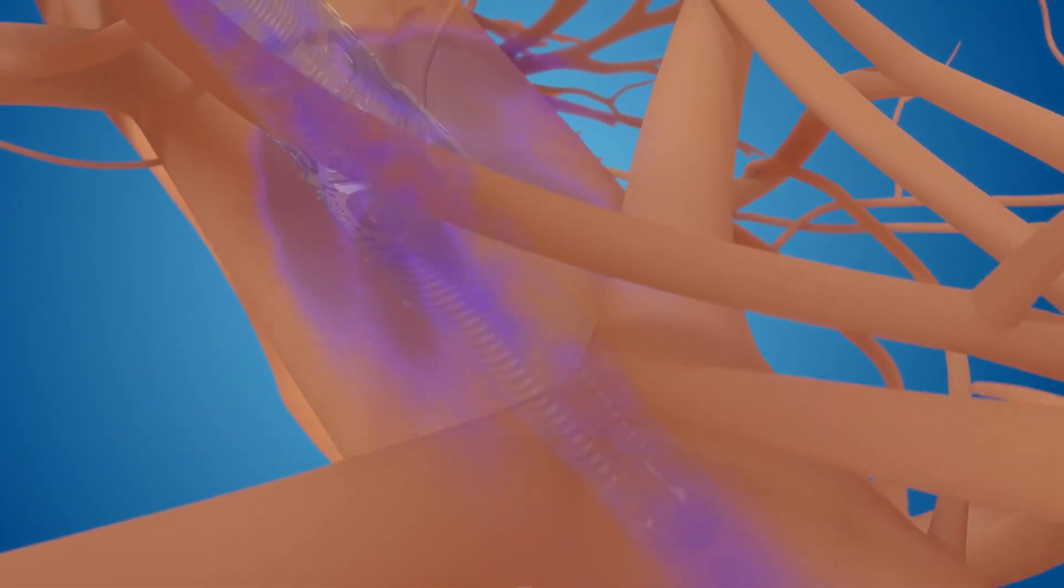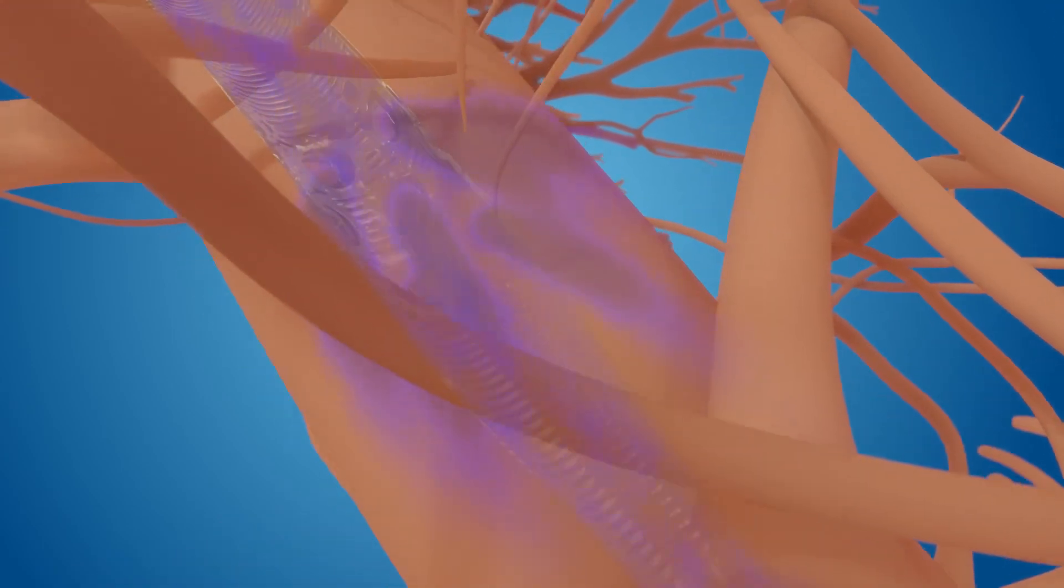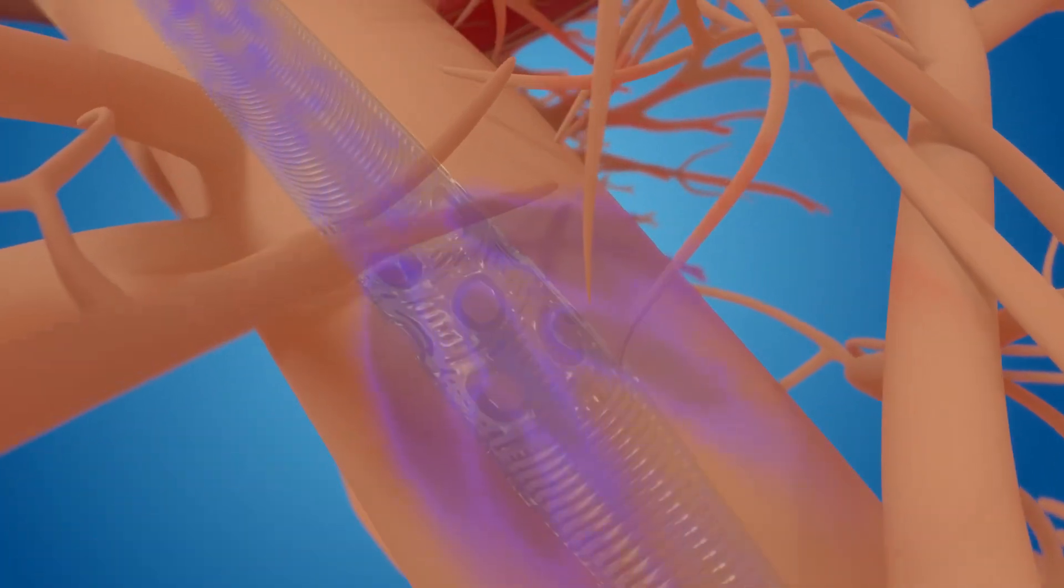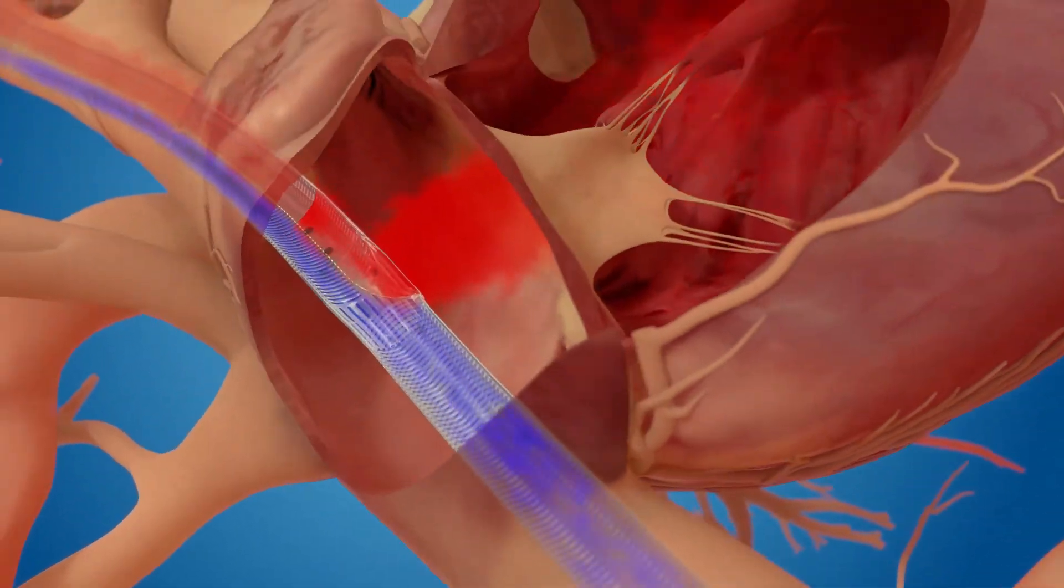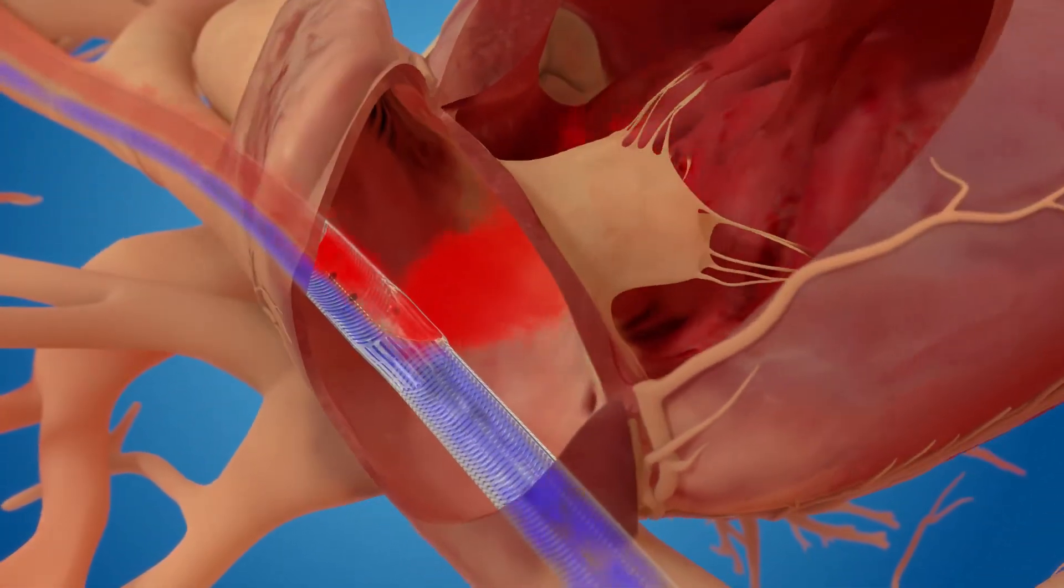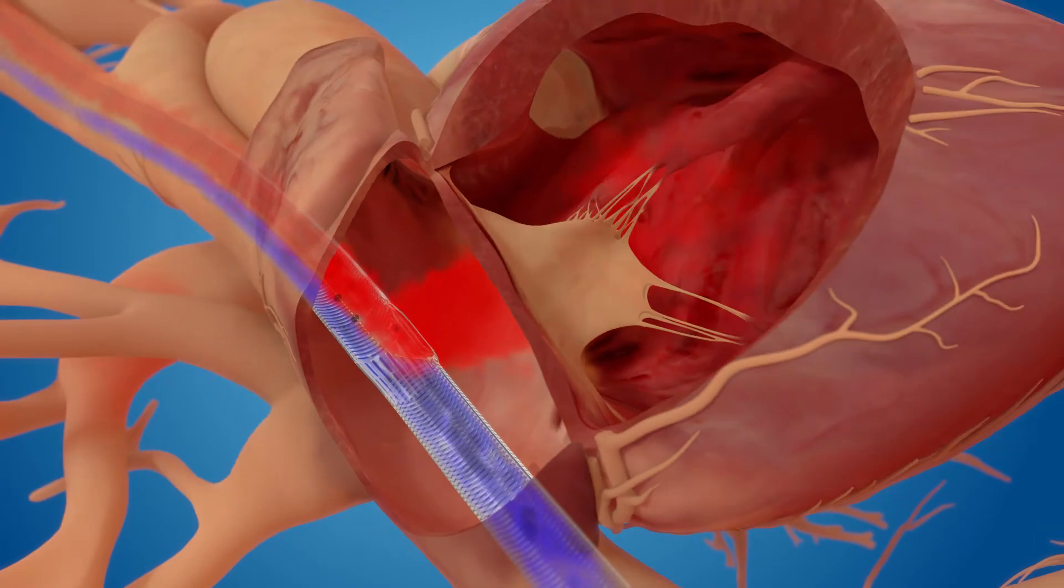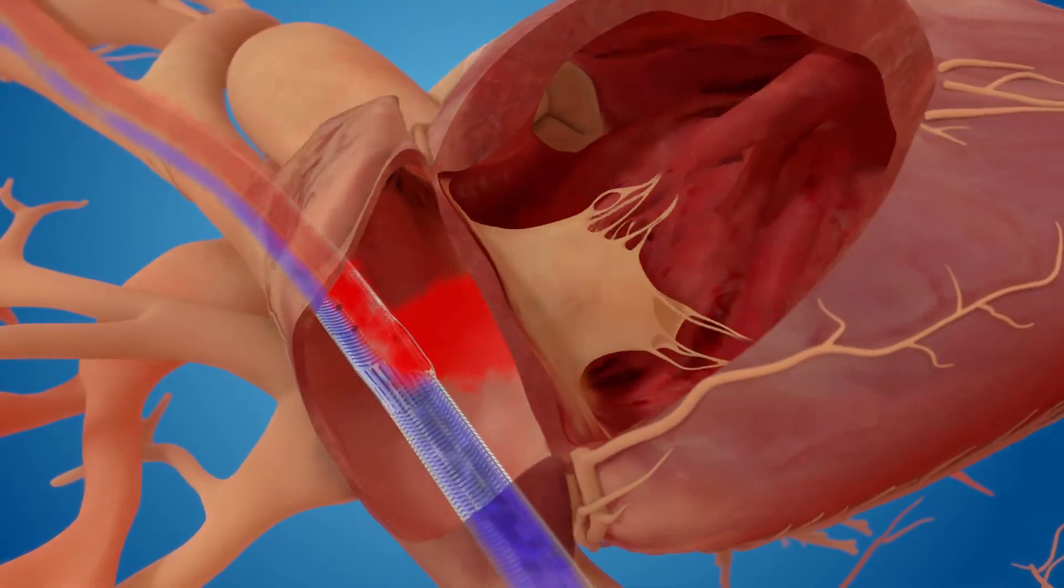When placed correctly, the distal tip and all distal drainage holes are in the IVC, and the infusion port is in the right atrium. The infusion port is designed to be directed towards the patient's anterior in the direction of the tricuspid valve.